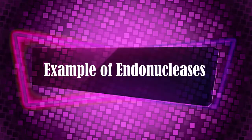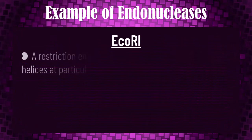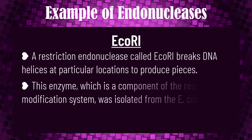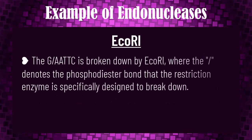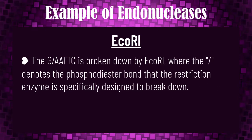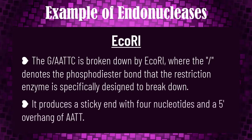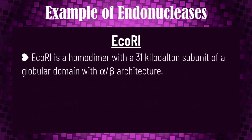Let's dive into examples of endonucleases. At number one we have EcoR1: a restriction endonuclease called EcoR1 breaks DNA at particular locations to produce pieces. This enzyme, a component of the restriction-modification system, was isolated from E. coli species. EcoR1 breaks down the G↓AATTC sequence at the phosphodiester bond. It produces a sticky end with four nucleotides and a 5-prime overhang of AATT. EcoR1 is a homodimer with a 31 kilodalton subunit of a globular domain with alpha-beta architecture.